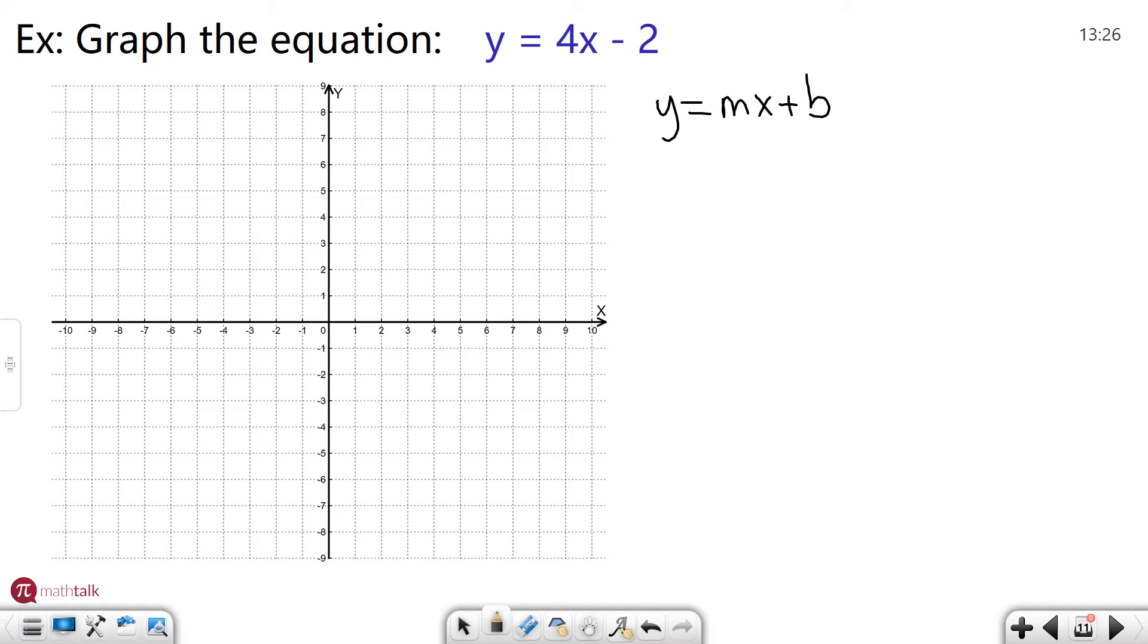So the first thing that I do is I take my b value, my y-intercept and I graph that on the y-axis. So in this case it's minus 2 or negative 2. So I'm going to go to my y-axis and draw a dot at minus 2. And then I'm going to use my slope which is 4 and I'm going to find another point on that line.